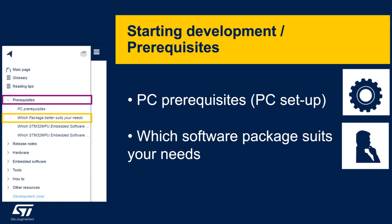The prerequisites for PC installation are provided to develop on STM32MP1. The different software packages are presented: starter package, developer package, distribution package, STM32CubeMP1 firmware package, and M4 firmware. The article 'Which package should you need' explains the package contents and their usage.